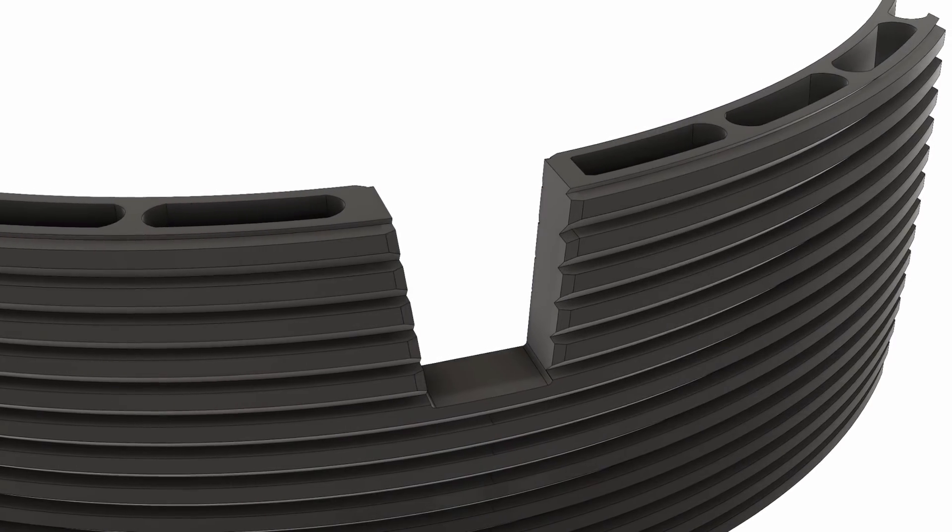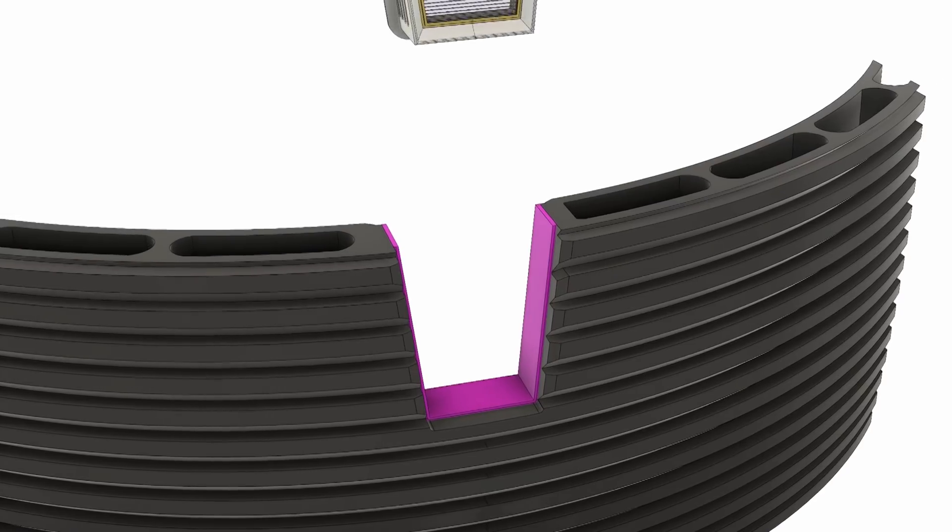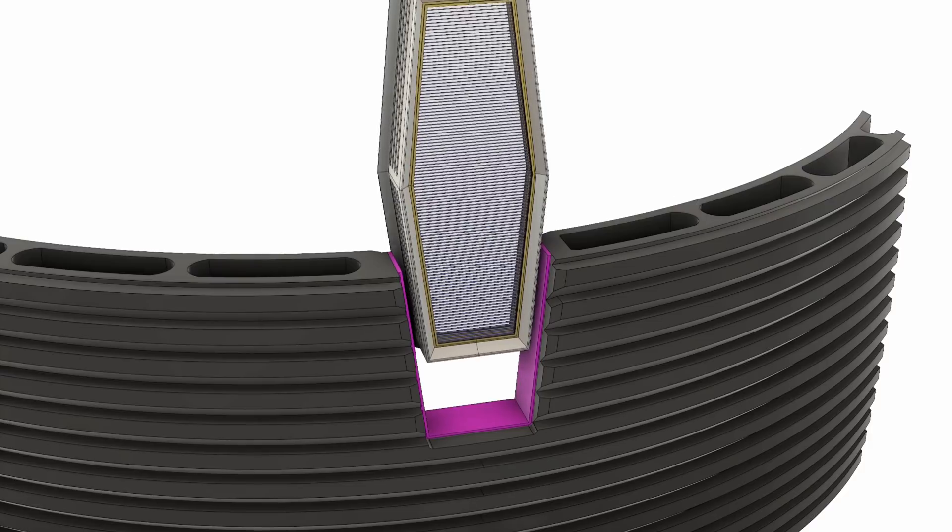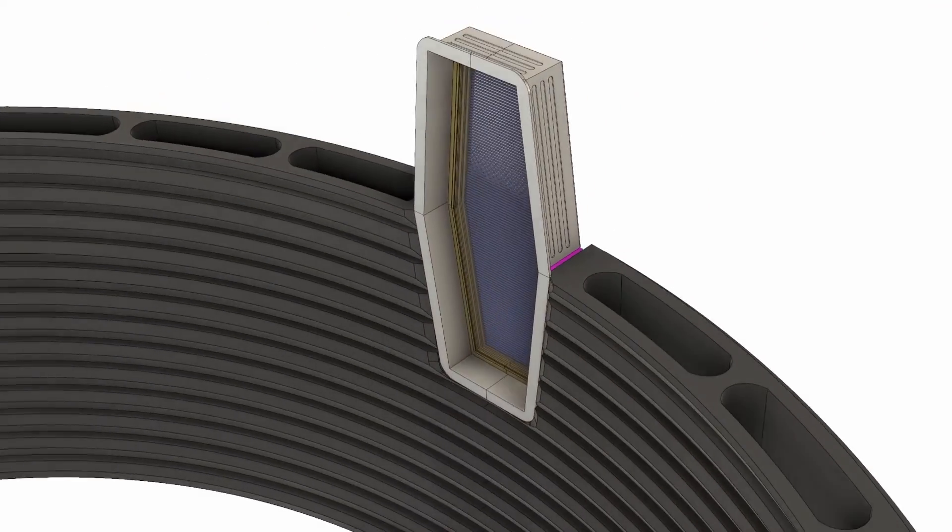During construction, elements are placed into precise voids left behind by the printer. Integration consists of depositing a coat of air tight but flexible sealant, placing the elements, and holding until the sealant adheres.